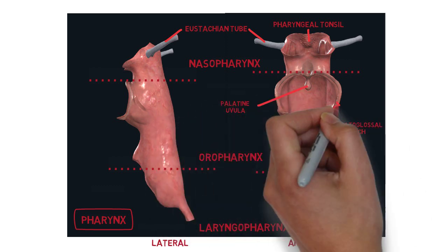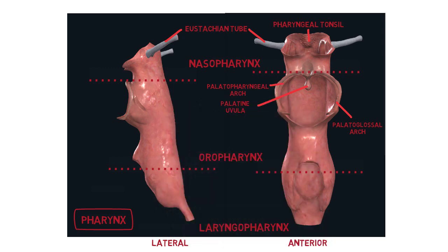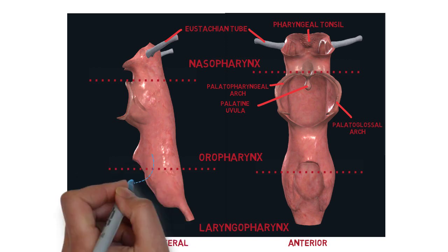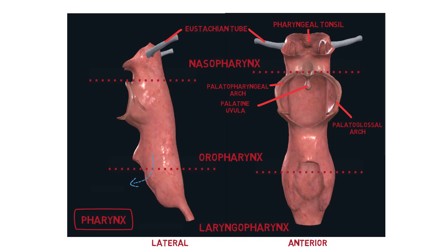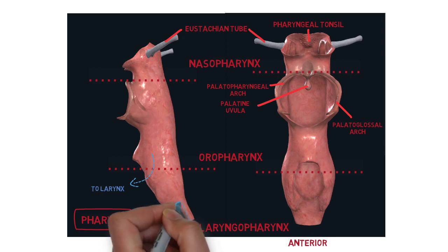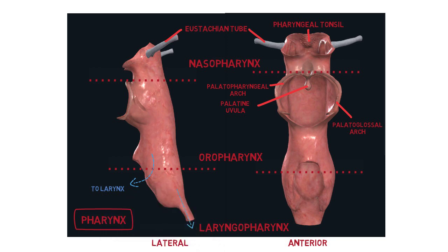In the oropharynx, there is the palatine uvula, palatoglossal arch and palatopharyngeal arch. However, these structures are actually more important to highlight in the gastrointestinal system because the pharynx is probably the only component shared between the respiratory and gastrointestinal system. So the muscles of the pharynx are important in the swallowing process and we will highlight them in detail in the gastrointestinal system. Essentially, the pharynx acts only as a passage for air between our nasal cavities and the larynx, which is our voice box.